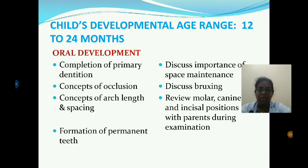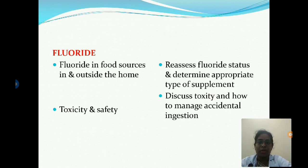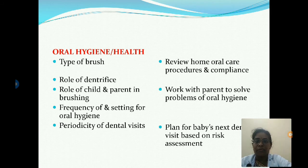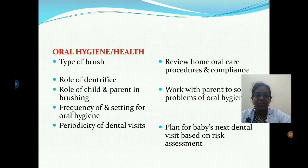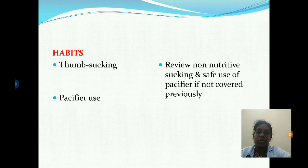For twelve to twenty-four months, oral development includes completion of primary dentition, concepts of occlusion, arch length and spacing, and formation of permanent teeth. Parents should discuss the importance of space maintenance, review molar, canine, and incisal positions during examination. Fluoride topics include food sources in and outside the home, fluoride toxicity and safety, reassessment of fluoride status, determining appropriate supplement type, and management of accidental ingestion. Oral hygiene covers the type of brush to use, roles of child and parent in brushing, frequency, periodicity of dental visits, and reviewing home care procedures.